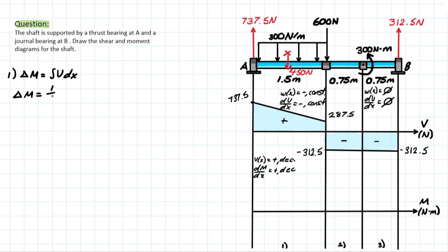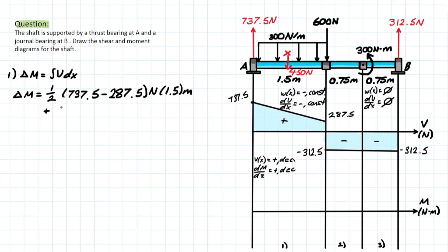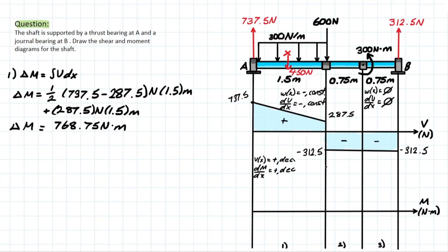We split the shear diagram into triangular and rectangular sections to get the area. For the triangle: (737.5 minus 287.5) times 1.5 meters, then for the rectangular section: 287.5 newtons times 1.5 meters. Solving that gives us a difference in moment of 768.75 newton-meters, and we can plot that point on the diagram.